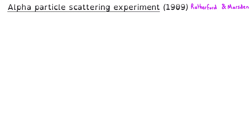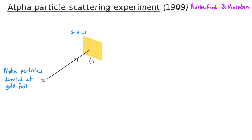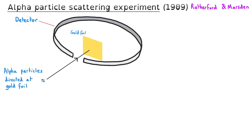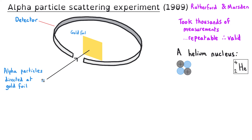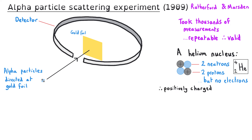In 1909, two scientists named Rutherford and Marsden carried out the alpha particle scattering experiment. In this experiment, a continuous stream of alpha particles were directed at an incredibly thin sheet of gold foil. Rutherford and Marsden used a detector to follow the paths that the alpha particles travelled, and they took thousands of different measurements in order to ensure that the conclusions they made would be valid. Alpha particles can also be referred to as helium nuclei, because they are made up of two neutrons and two positive protons, and so overall alpha particles have got a positive charge and significant mass.